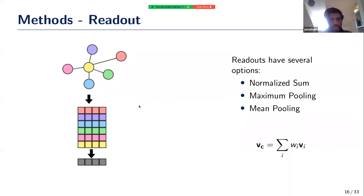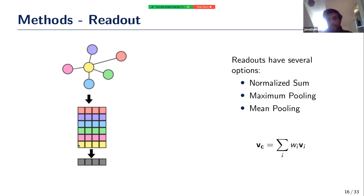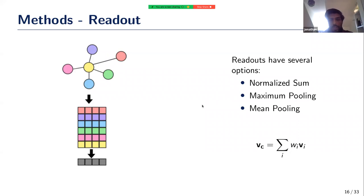Max pooling doesn't need modification since the maximum is not dependent on the number of nodes. For normalized sum, you can use the weighted average and then normalize the result. So we know what changes to make to the GNN to accommodate node weights.